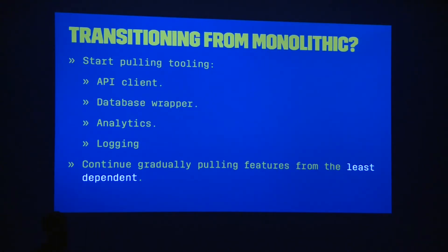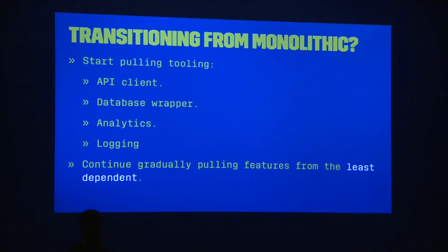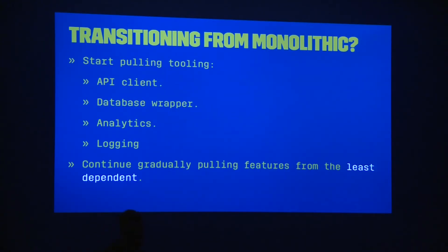What if you have a big monolithic project and want to transition into a modularized app? First, you should extract the tooling: the API layer, any persistence solution like Core Data with a wrapper, analytics, and logging. Once you have these tools extracted, you start pulling out features — extract search, extract the player, put them in a framework, use the tooling that other frameworks provide, and then link your app against the new feature framework.